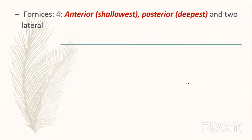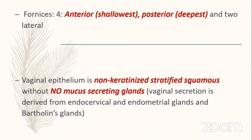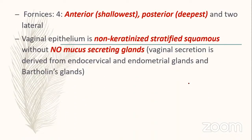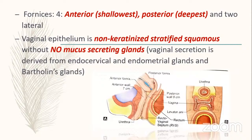There are four fornices in the vagina: anterior, posterior, and two lateral. The shallowest fornix is anterior and the deepest is posterior. Vaginal epithelium is non-keratinized stratified squamous with no mucus-secreting glands. There are no glands in vaginal epithelium — vaginal secretion is derived from cervical, endocervical, and endometrial glands.